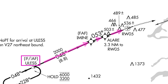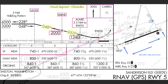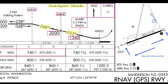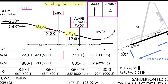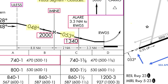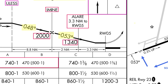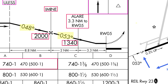Second, note the slight course change at IMINI, the final approach fix. You also must observe the 1,340-foot crossing restriction at ALARE. That limit applies regardless of whether you are flying to the LP or LNAV MDA. Remember, this is a 2D approach to an MDA — there are no published LPV or LNAV-VNAV minimums to DAs.